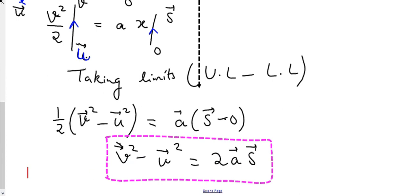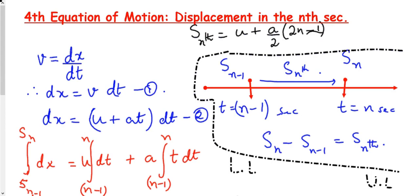We have derived the third equation of motion, v² - u² = 2as — a relation between velocity, acceleration, and displacement. Now we move to the fourth equation of motion: displacement in the nth second. The formula is: Sₙₜₕ = u + (a/2)·(2n - 1).